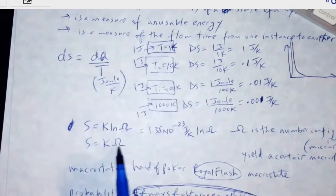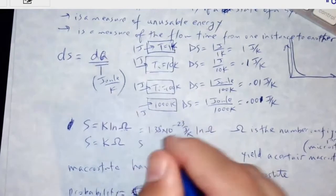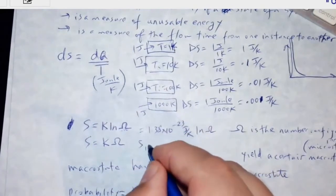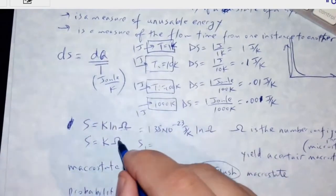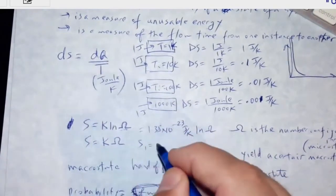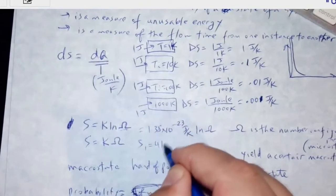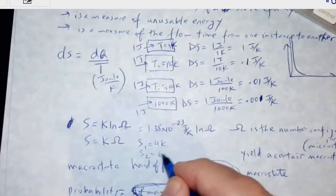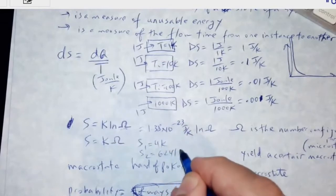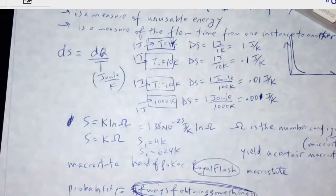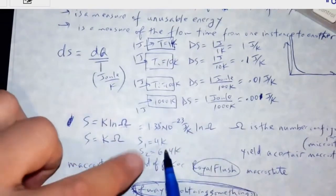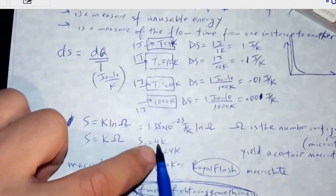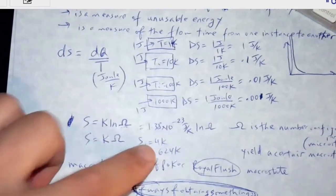If it had been a linear scale, I would have said the entropy of a royal flush is four ways of getting it, so it's just 4k. But the entropy of a four-of-a-kind is 624k. Whereas with the log definition, they did it as ln(624) and then ln(4).